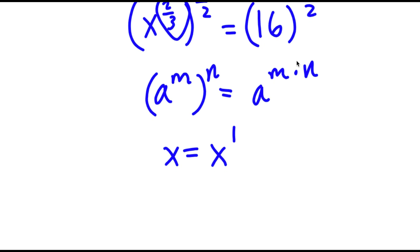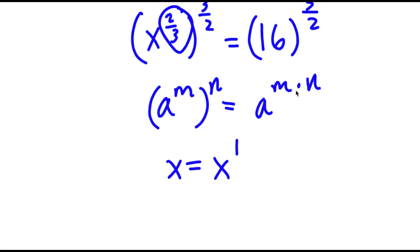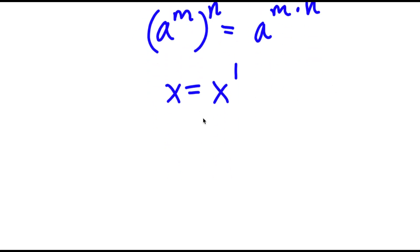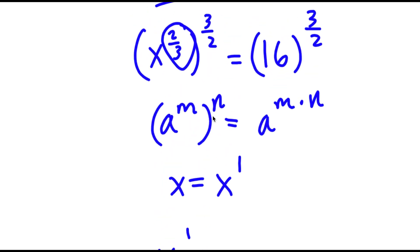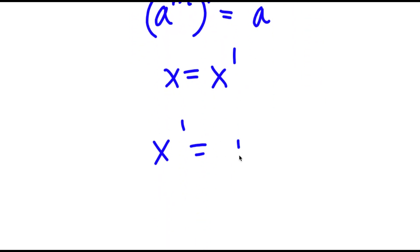So now, because if I have something in the form a to the power of m to the power of n, this is equal to a to the power of m times n, x to the power of 2 over 3 to the power of 3 over 2 is x to the power of 2 over 3 times 3 over 2, which is simply 1. And this is equal to 16 to the power of 3 over 2.